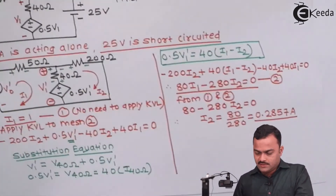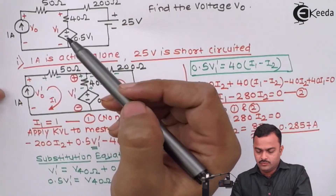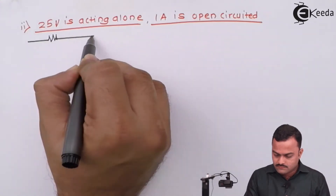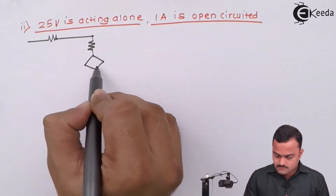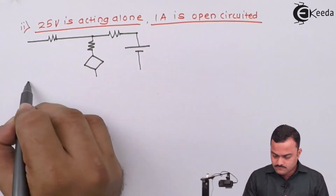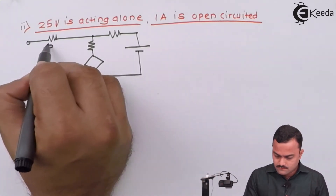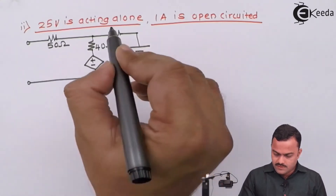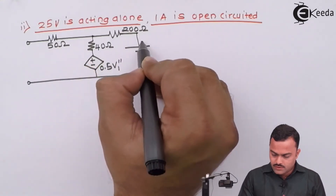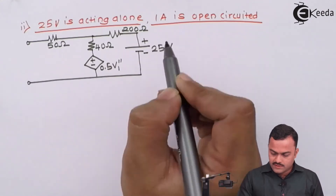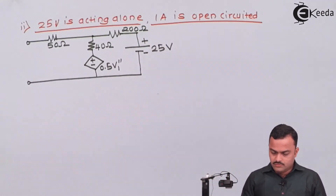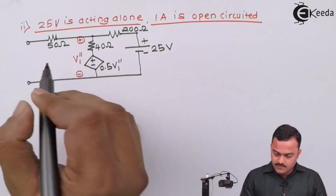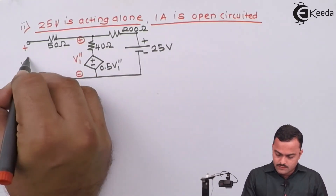We will get a modified circuit. In this circuit the 1 ampere current source is open-circuited. We want V1'' in the modified circuit which has 200 ohm and 25V acting alone. This is V1'' and what we want now is V0''.